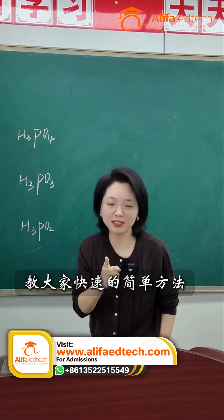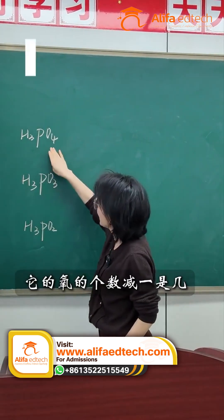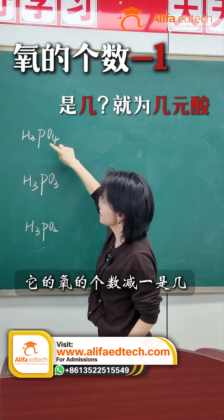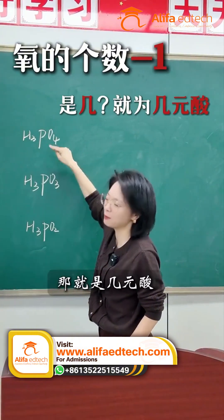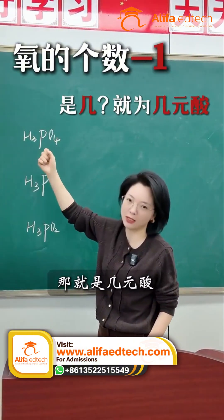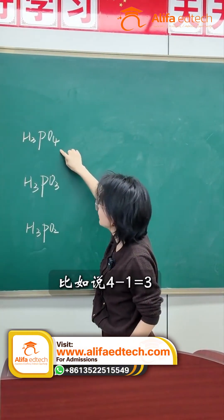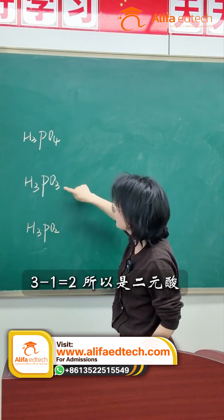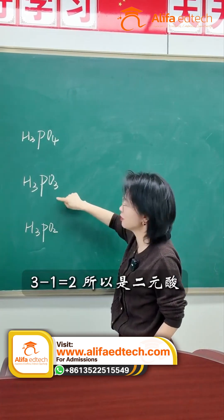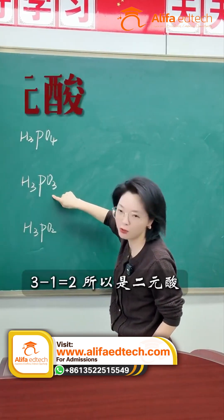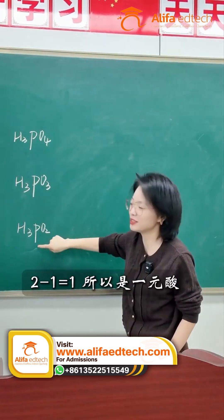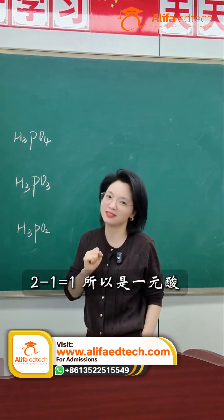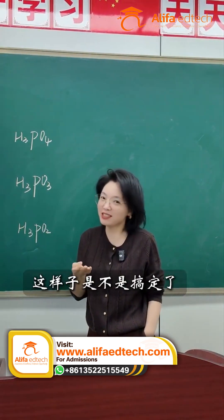So today I'll teach you a quick and simple method. Just take the number of oxygen atoms, subtract 1, and whatever you get, that's the basicity of the acid. For example, 4 minus 1 equals 3 — it's a triprotic acid. 3 minus 1 equals 2, so it's a diprotic acid. 2 minus 1 equals 1, so it's a monoprotic acid. See, that makes it easy, right?